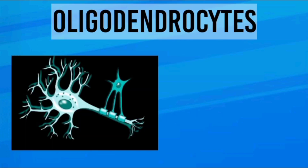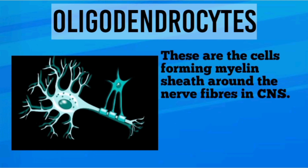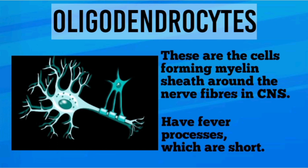Oligodendrocytes are the cells forming the myelin sheath around the nerve fibers in the CNS. These are short and have fewer processes.